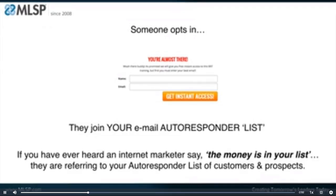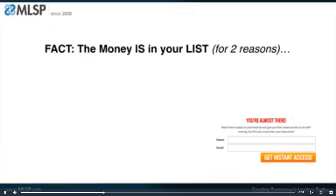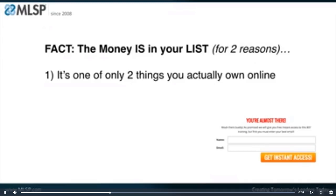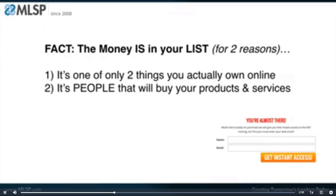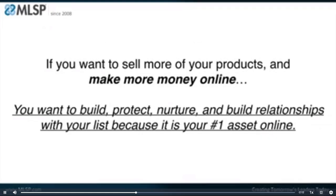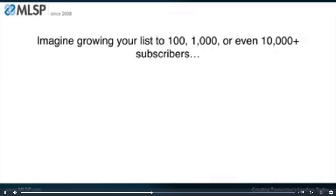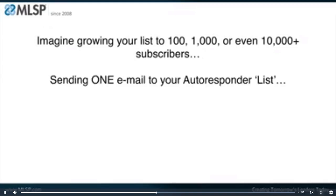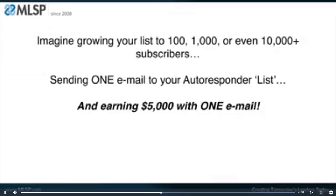That's what an autoresponder is. If you have ever heard an internet marketer say 'the money is in your list,' they are referring to your autoresponder list of customers and prospects. The money is in your list for two reasons: number one, your list is one of only two things you actually own online — your blog is the other. It's people that will buy your products and services, and an autoresponder helps you manage, follow up with, and communicate with them. Imagine growing your list to 100, 1,000, or even 10,000 plus subscribers, sending one email, and earning $5,000 with one email.